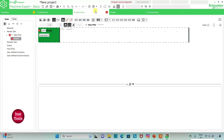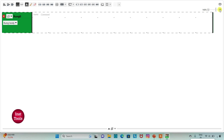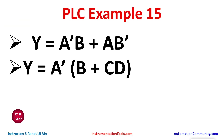I will go to the Programming tab where I will be drawing a ladder diagram. For Y = A' B plus A B', we will use normally closed contacts for A' and B'. We will connect A' in series with B, and A in series with B', then implement an OR gate with A' B and A B'.